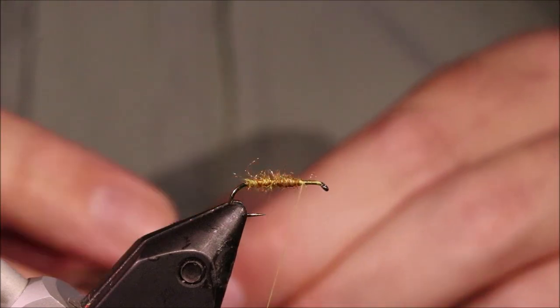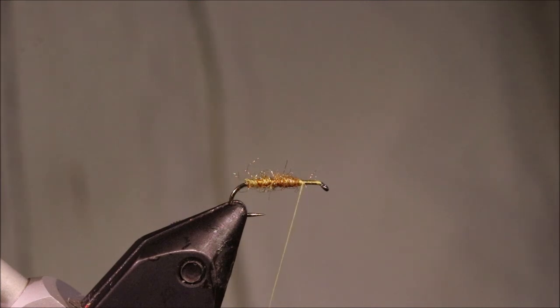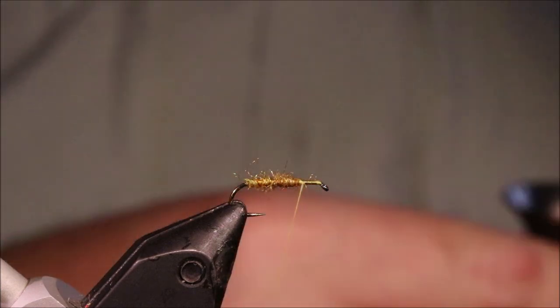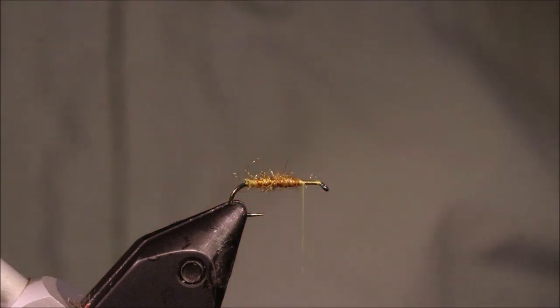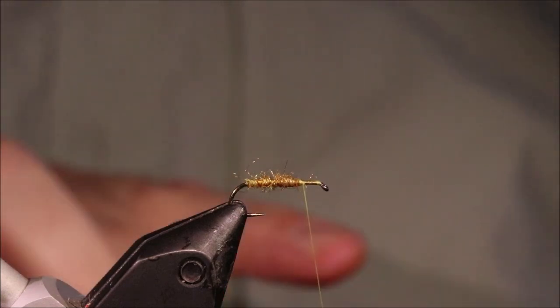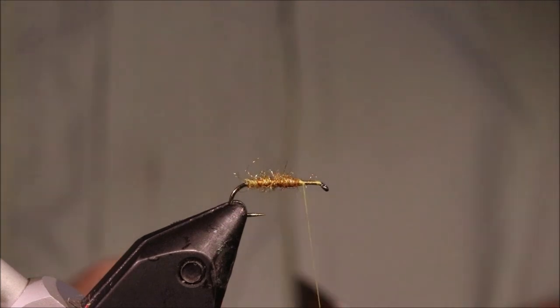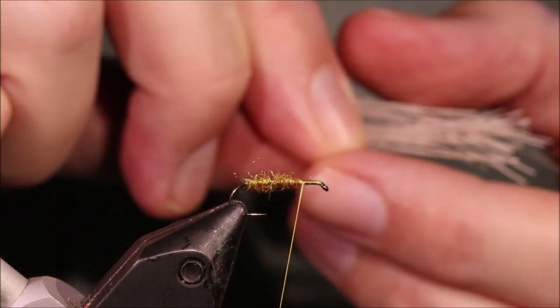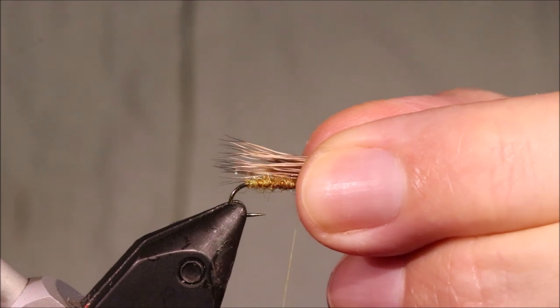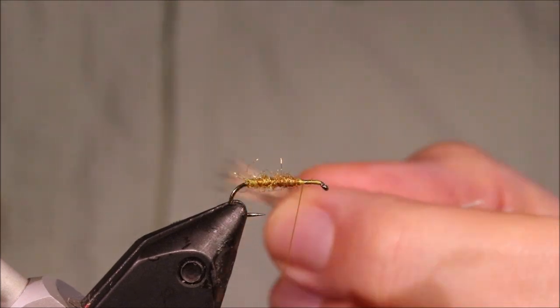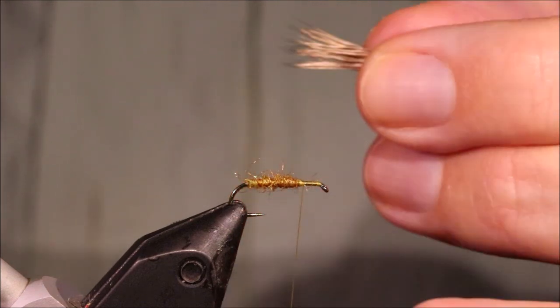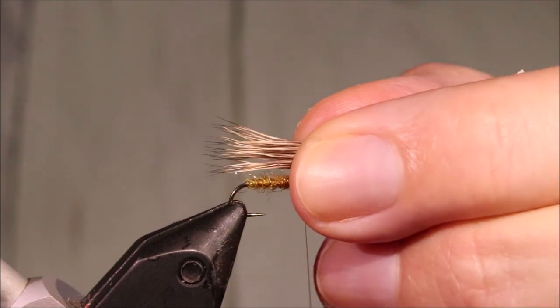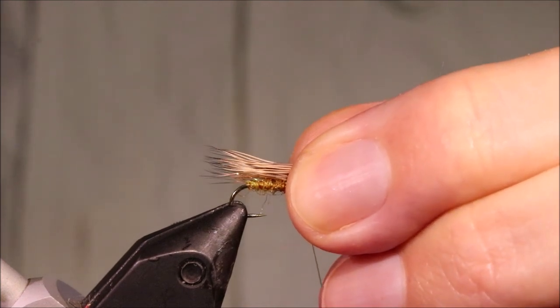So I'm just cleaning out the butts of my hair. Then it can go in the stacker. And when the tips are aligned, take them out facing the right direction. Get ready to tie them in. Spin your bobbin to cord up your thread. Then you can measure your wing.